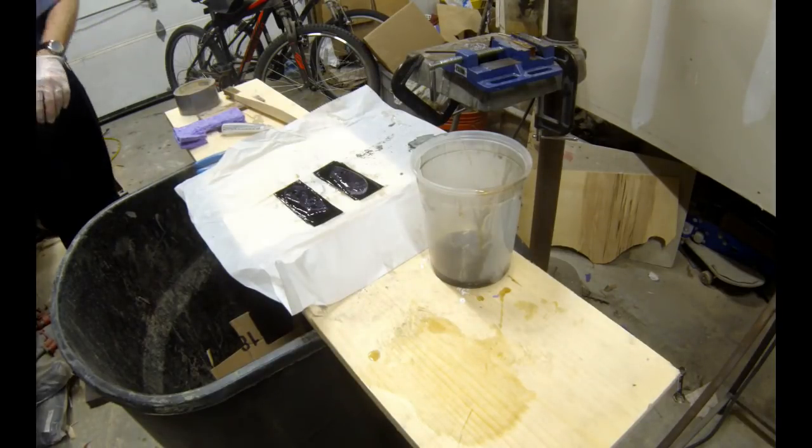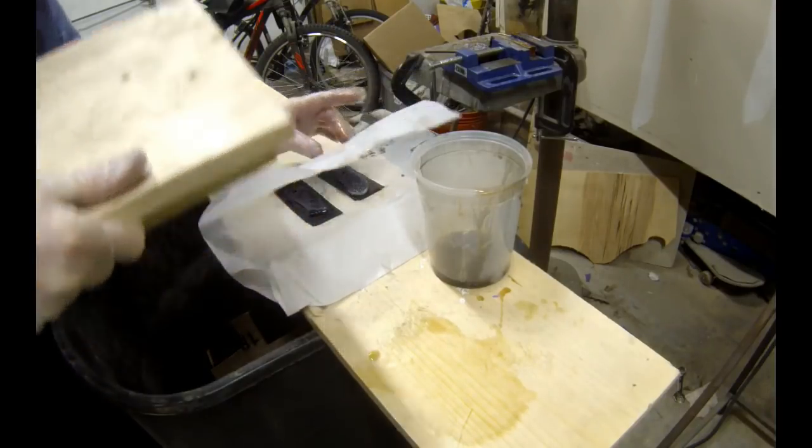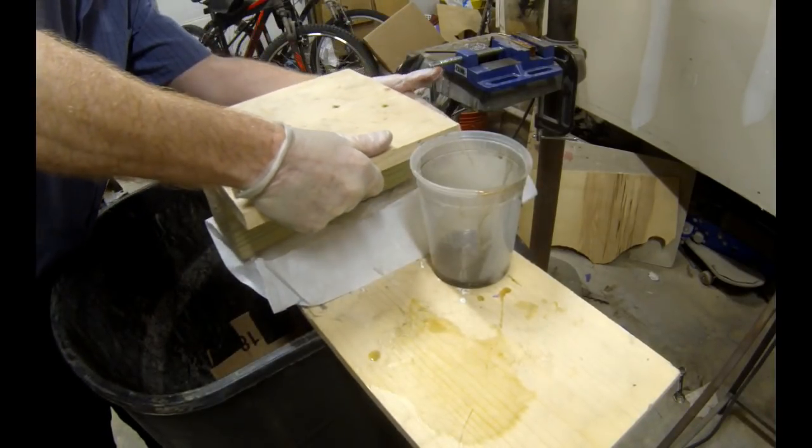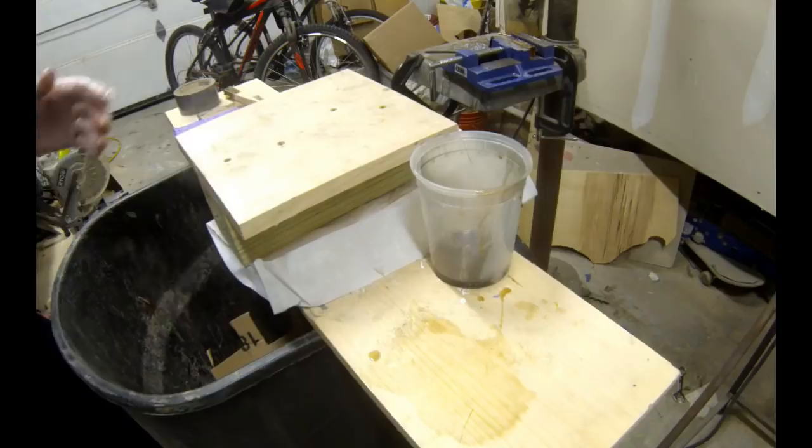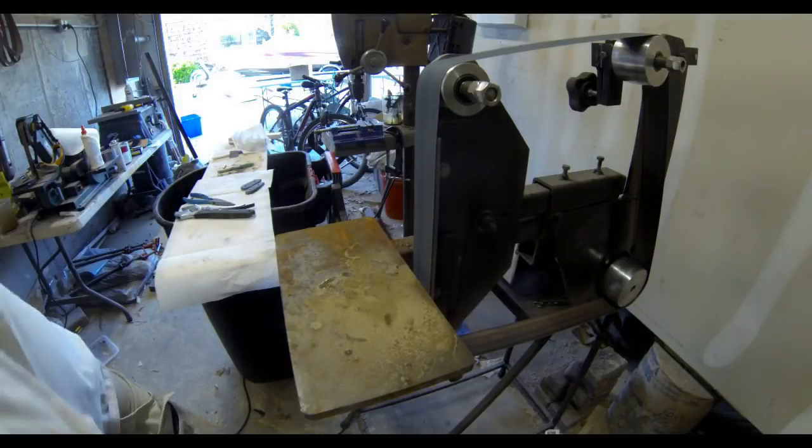I'm then going to fold over that wax paper and I'm just going to hold those scales in position against that construction paper just with a weight. I'm just using the top of my micarta press, but you could use any board or lead weight you wanted.